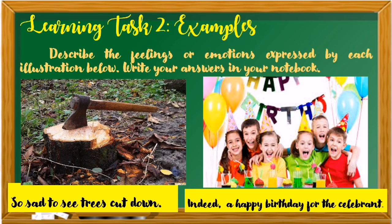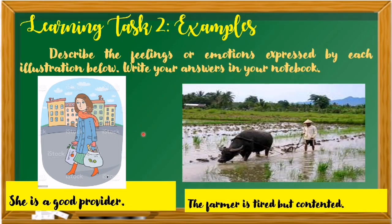Here are more examples for the other pictures. For the first picture: so sad to see trees cut down. For the next picture: indeed a happy birthday for the celebrant. For another picture: she is a good provider. And for the second picture: the farmer is tired but contented. Again, you can write your own feelings or emotions that are described in each picture.